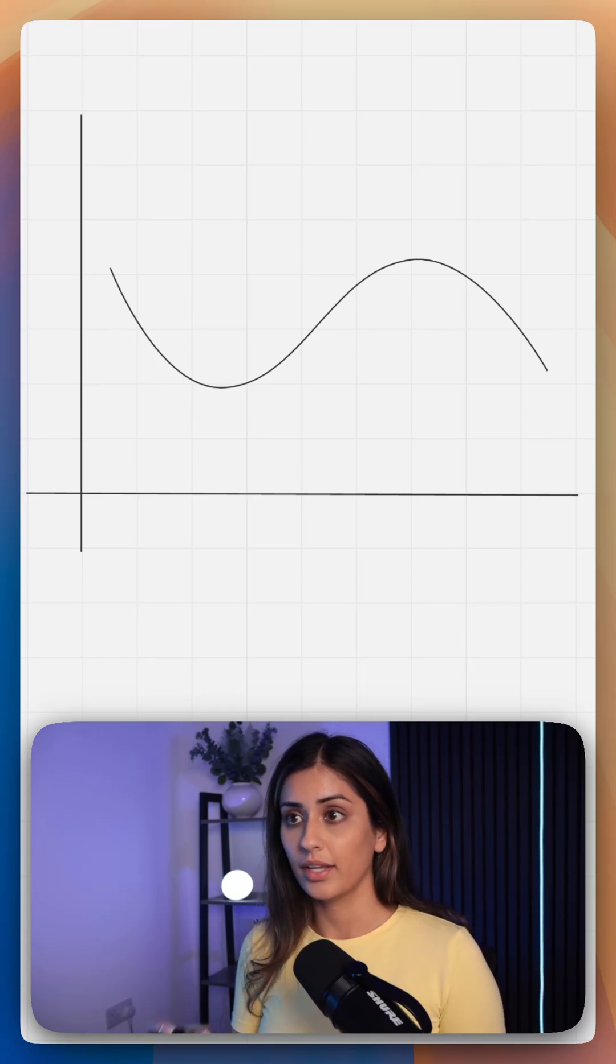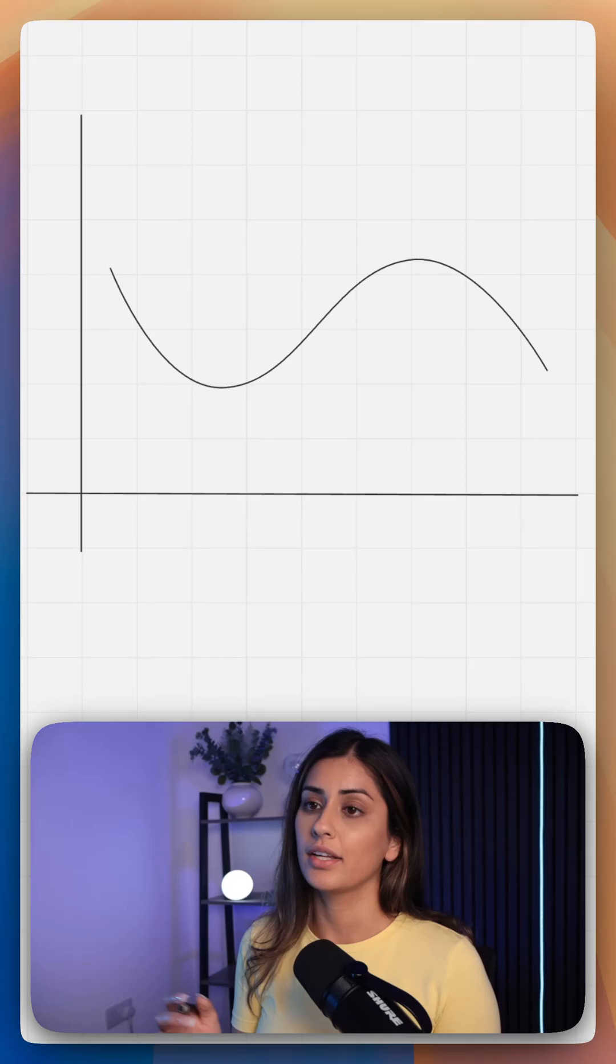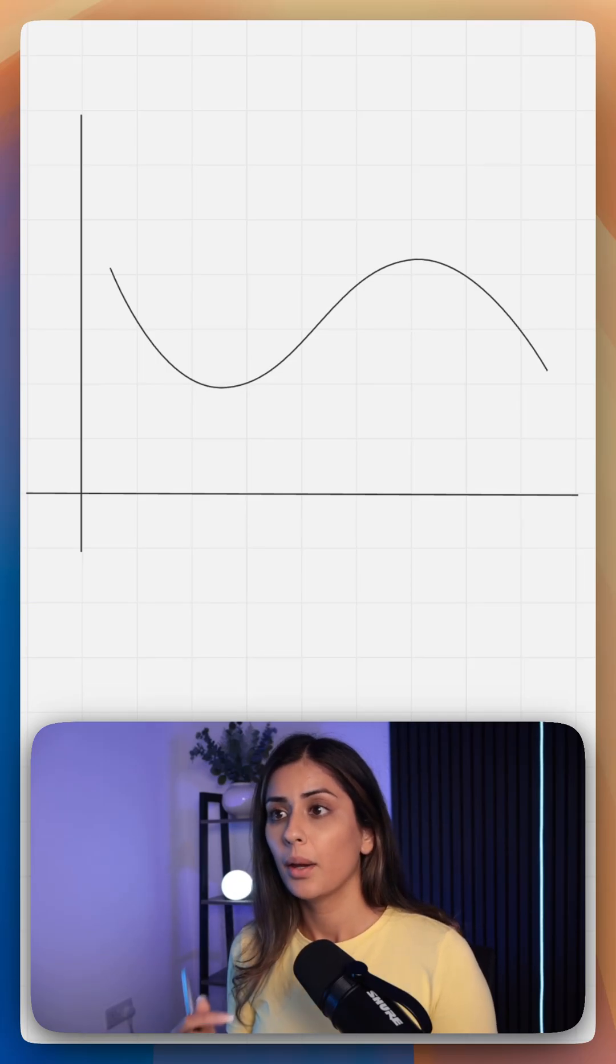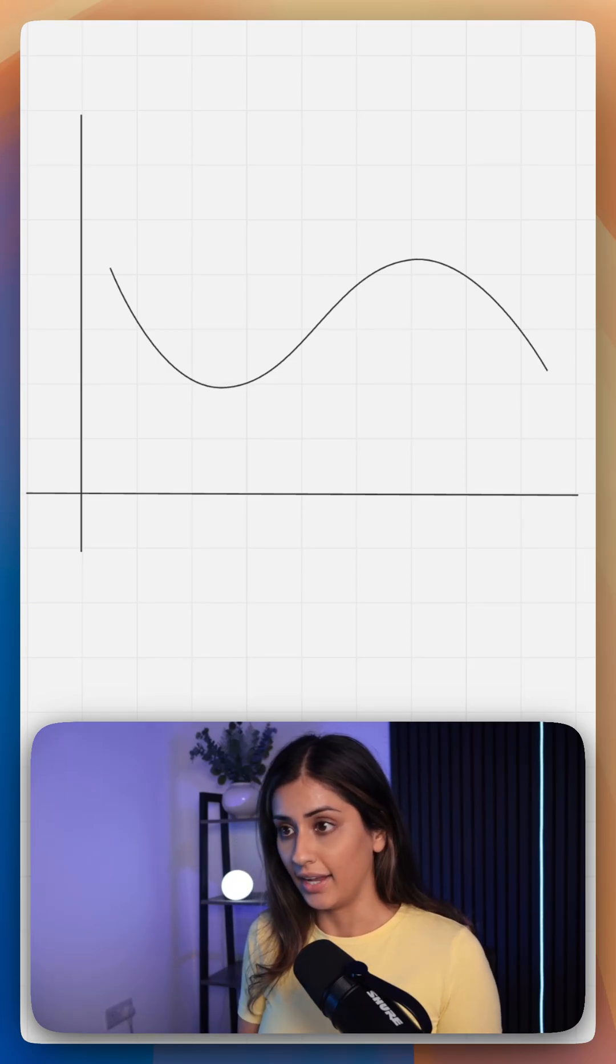In differentiation, you're taught that your second derivative is less than zero at a maximum and greater than zero at a minimum. But have you ever thought about why that's the case?